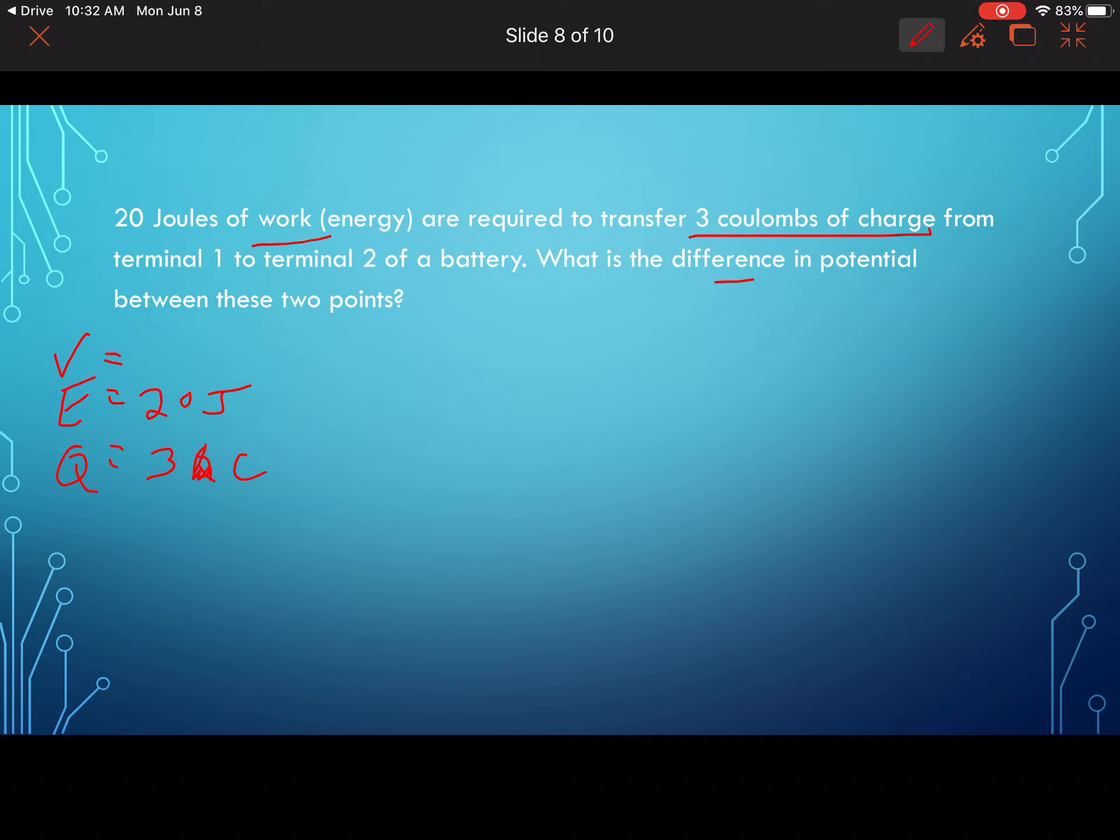What is the difference in potential between these two points? So our equation is V equals E over Q, so I'm just going to sub in my values. E is 20 joules; charge is 3 coulombs, and I get an answer of 6.67, and the unit I'm going to use is volts. So 6.67 volts for that one, and that's your answer there. You're done.